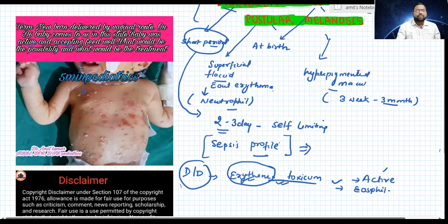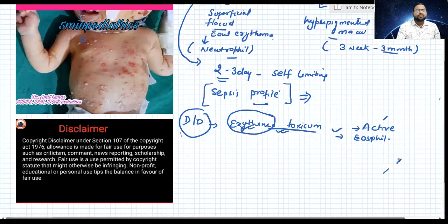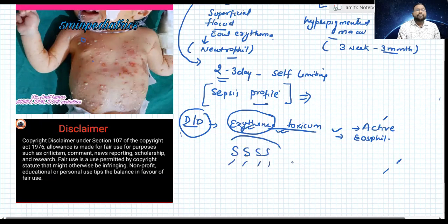This is the disclaimer. So you have to know the close differential, erythema toxicum and SSS, that is staphylococcal scalded skin syndrome. Here in these two conditions, you can also differentiate. Nikolski sign is positive in scalded skin syndrome and here it is negative. These two conditions are transient. Hope you enjoyed this video. Kindly like, subscribe and follow my channel. Thanks for watching.